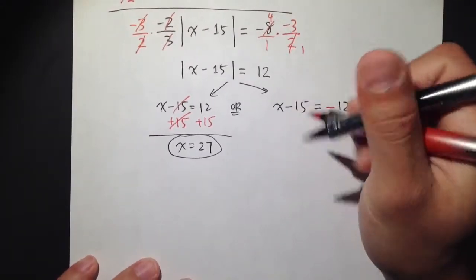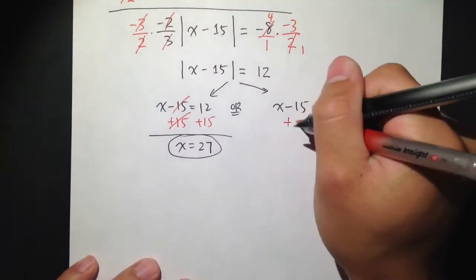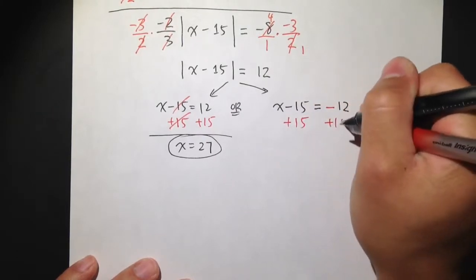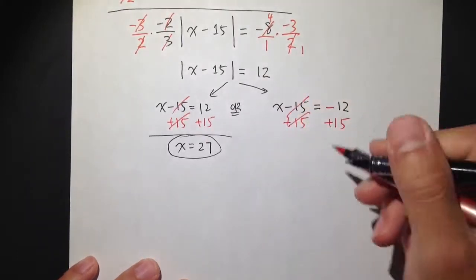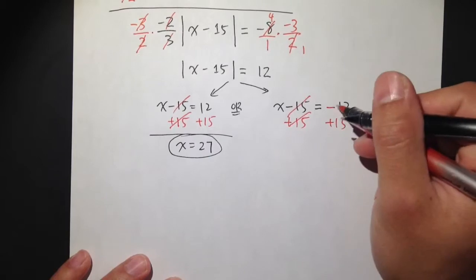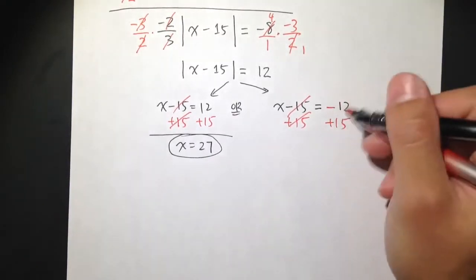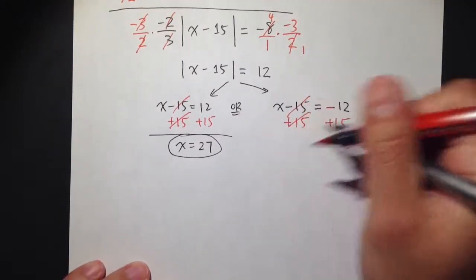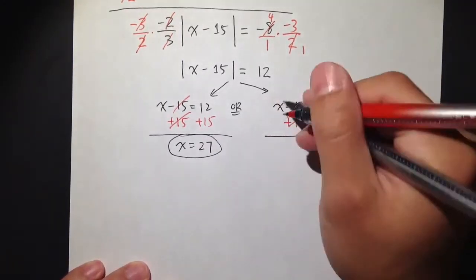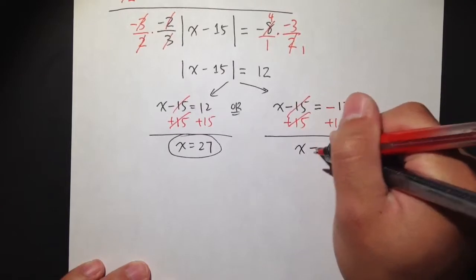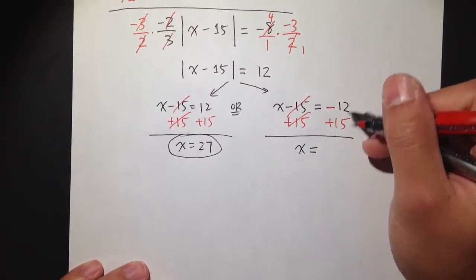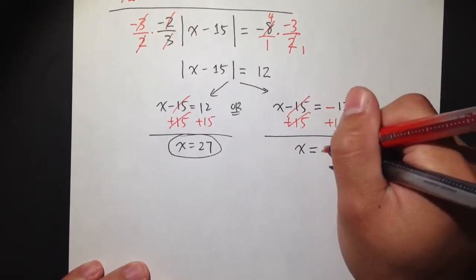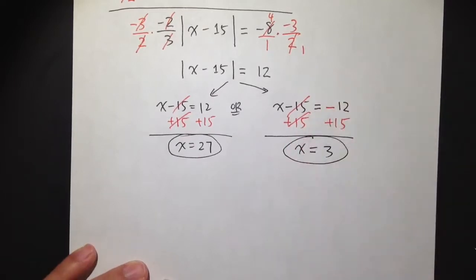And here, again, we are going to add 15 on both sides. You will notice that it's just the same procedure, but you have to work with negative number. Negative 12 here instead of that positive 12. So add 15 on both sides. And then I get x is equal to negative 12 plus 15 is positive 3. My second answer.